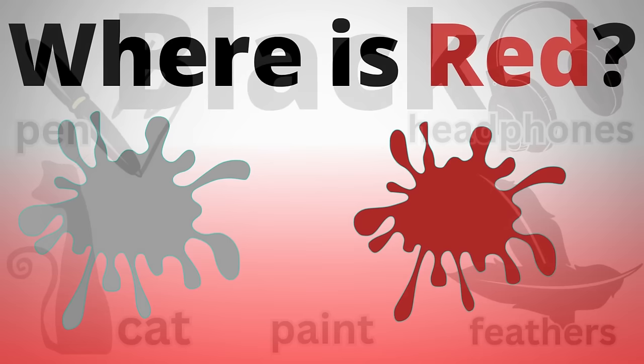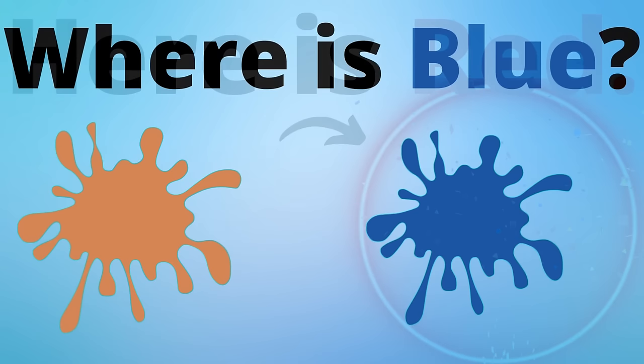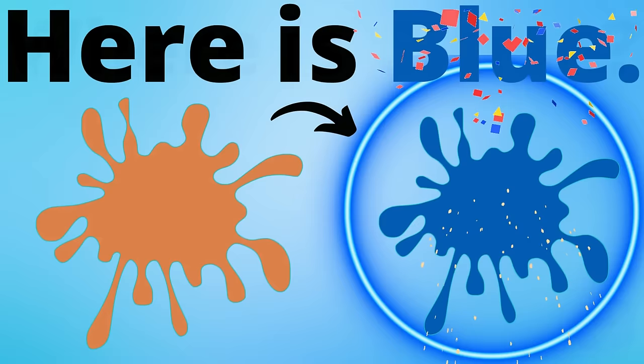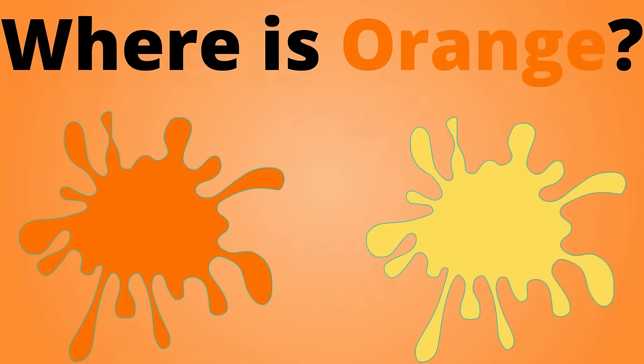Where is Red? Here is Red. Where is Blue? Here is Blue. Where is Green? Here is Green. Where is Orange? Here is Orange.